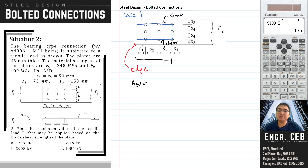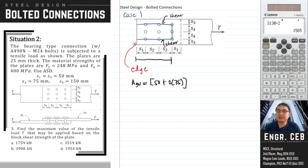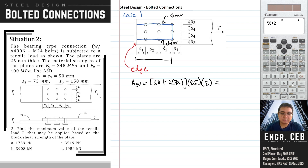S1 is 50 and S2 is 75. The total width is 50 plus 2×75. We multiply this by the thickness and by 2 because we have two areas in shear. Therefore, AGV is 10,000 square millimeters.